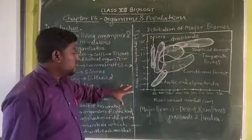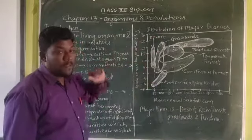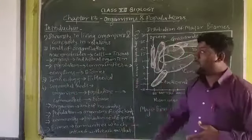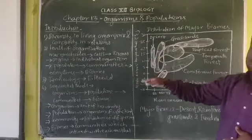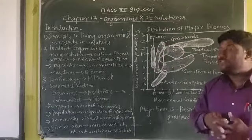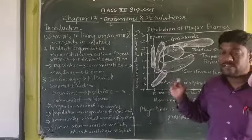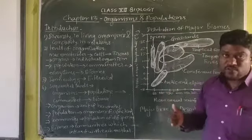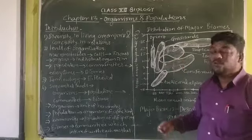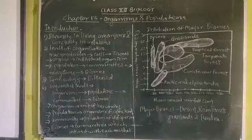So according to this graphical presentation, there are four major biomes: desert, rainforest (tropical forest and temperate forest), grassland, and tundra (arctic). That is all about the introduction to chapter number thirteen — Organisms and Population. We will discuss the next topic in the next lecture. Take a screenshot and note it down in your notebook. Thank you.